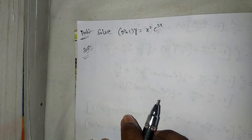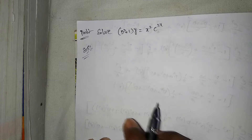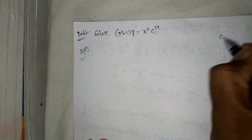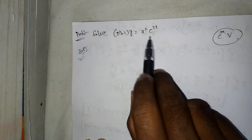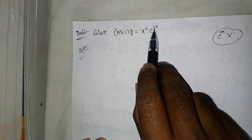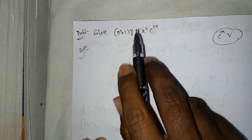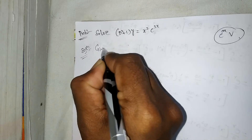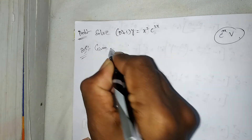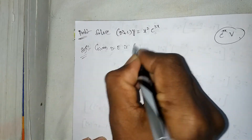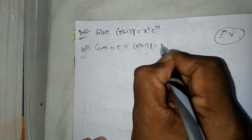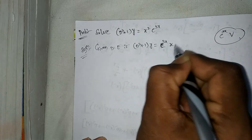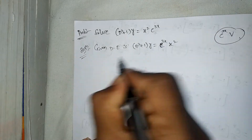Welcome to Raj's lecture. Today our topic is second and higher order differential equations, Method 4 — the e^x into V formula. The given differential equation is (D² + 1)y = e^(3x) · x².